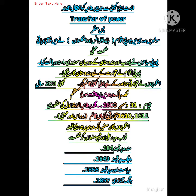سولہویں صدی میں یورپی اقوام نو آبادیاتی حکمت عملی اپناتی ہیں۔ نو آبادیاتی حکمت عملی کے تحت طاقتور ممالک کمزور ممالک میں تجارت کی غرض سے جاتے تھے اور وہاں پر اپنا قبضہ قائم کرتے تھے۔ یورپی اقوام میں انگلینڈ، فرانس اور ہالنڈ شامل ہیں۔ یہ ممالک ہندوستان کا رخ کرتے ہیں اور اسی زمانے میں یورپی ملاحوں نے یورپ اور ہندوستان کے درمیان سمندری راستہ بھی دریافت کر لیا۔